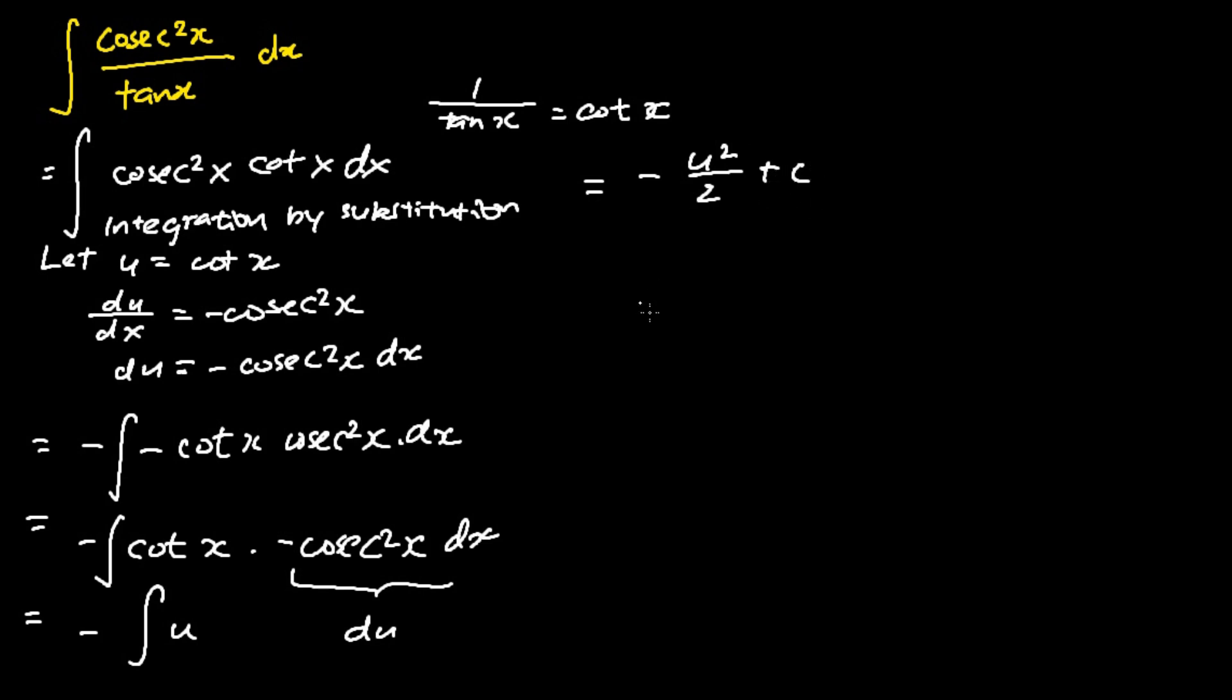Last but not least, I substitute my u as cotangent x. The final answer to this problem, the integral of cosecant square x over tangent x dx, is equal to the negative of cotangent square x over 2 plus c.